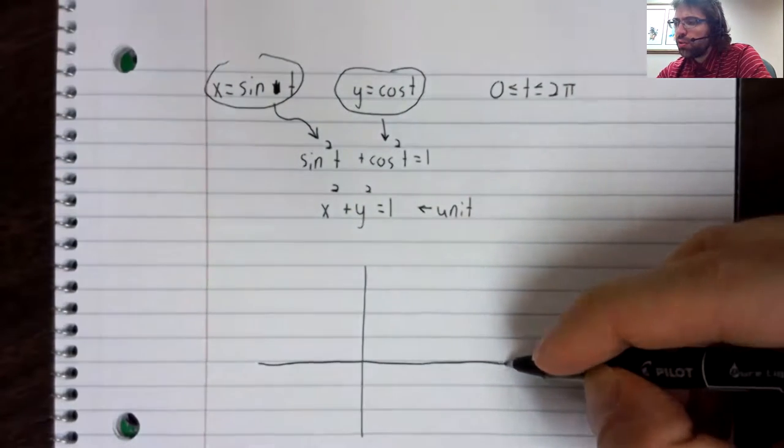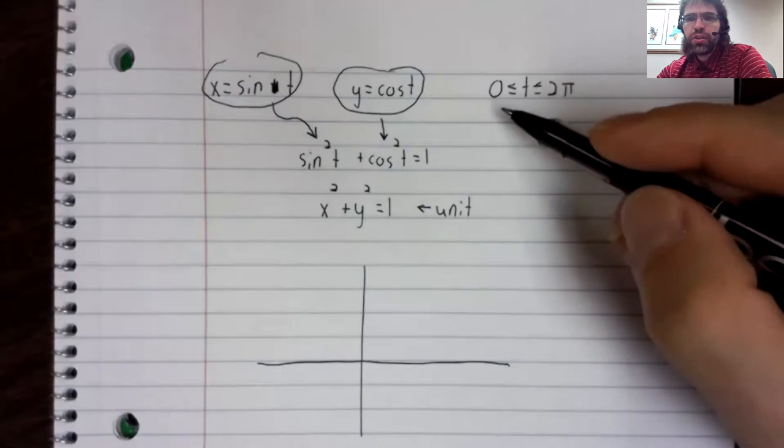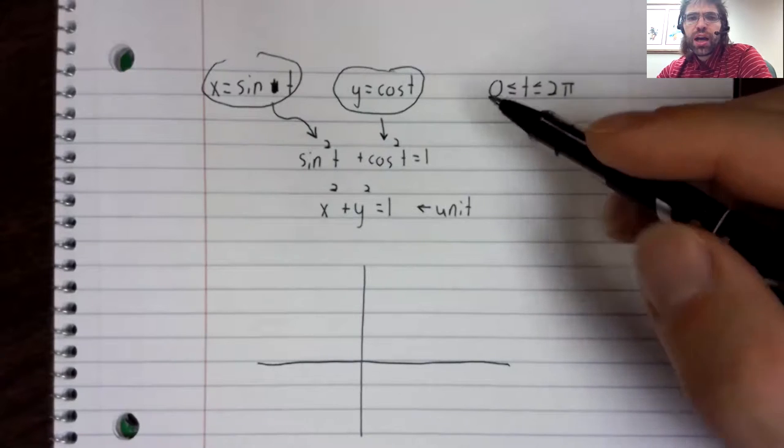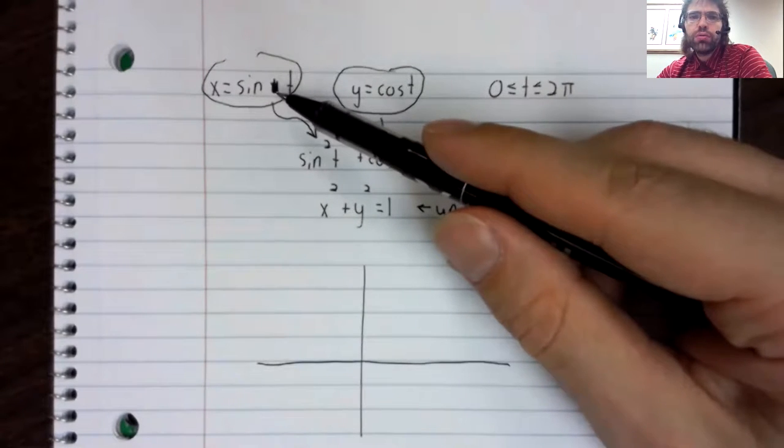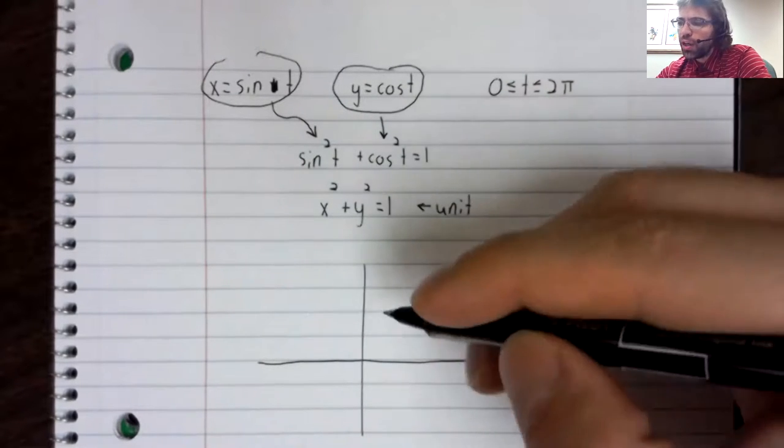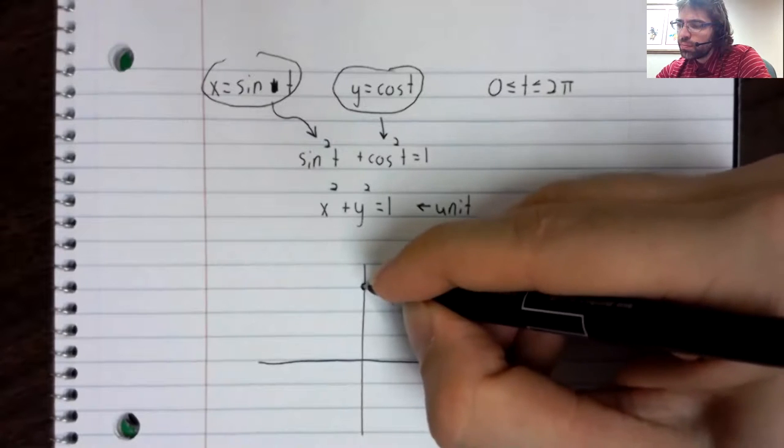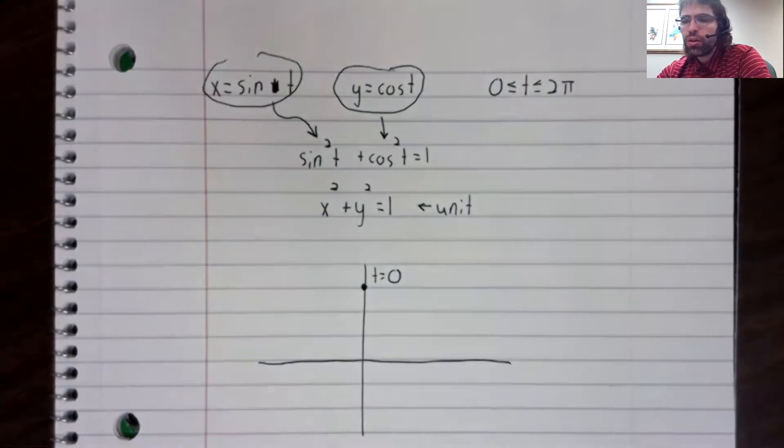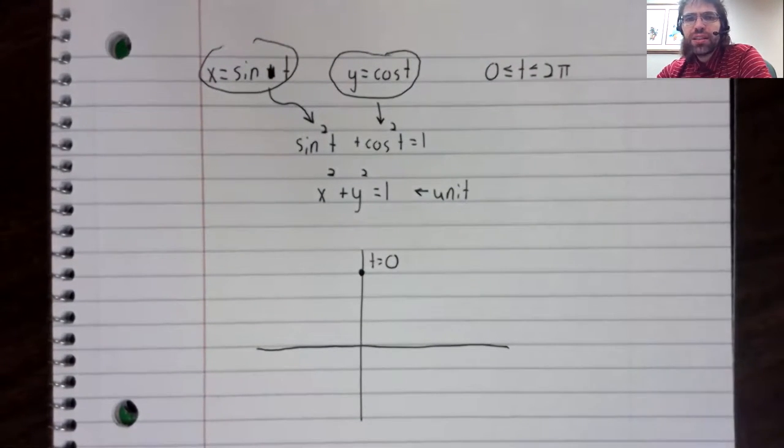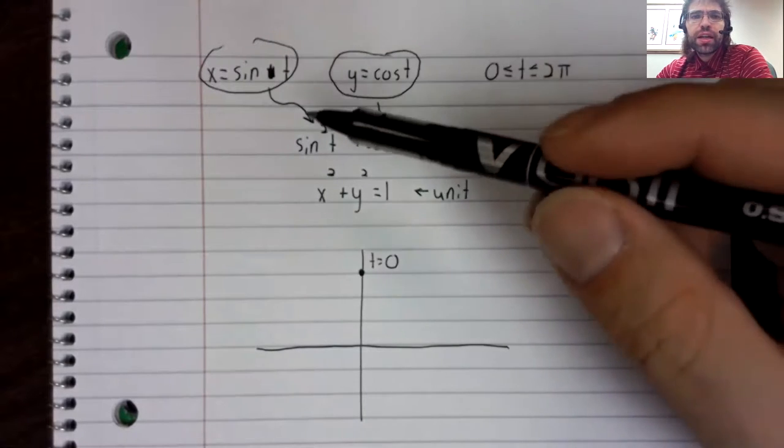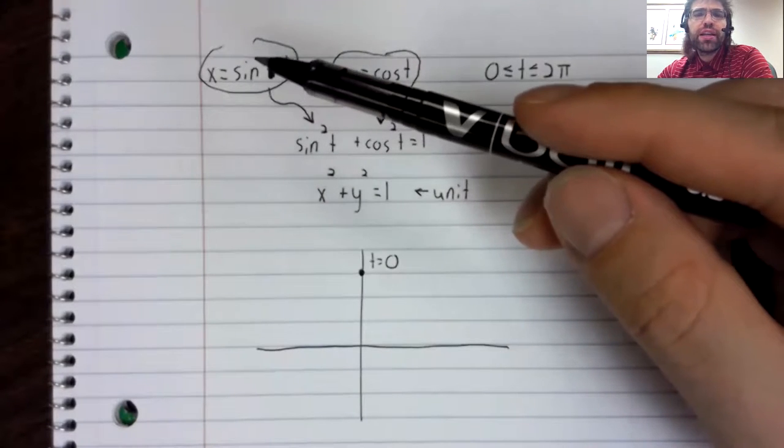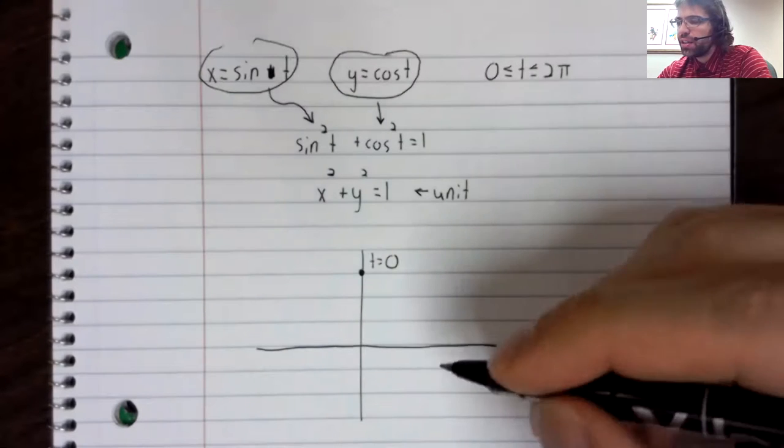And we can now look at our interval. We start at zero. The sine of zero is zero. The cosine of zero is one. So we start there. Time passes, T equals pi over two. Now the sine is one, the cosine is zero.